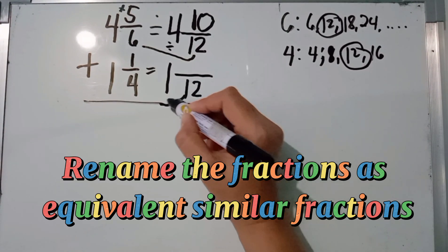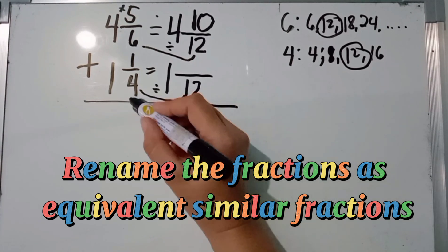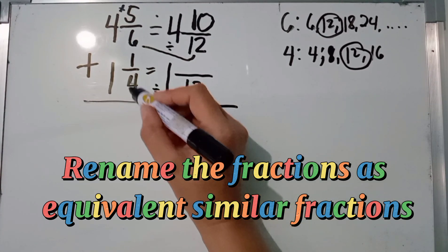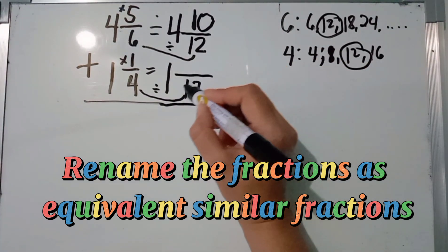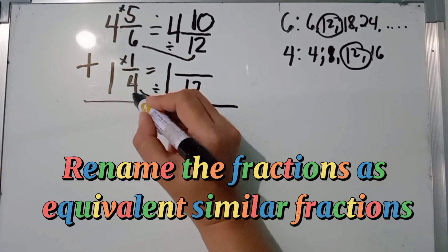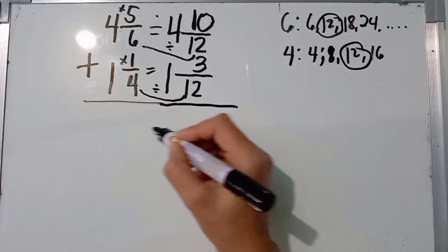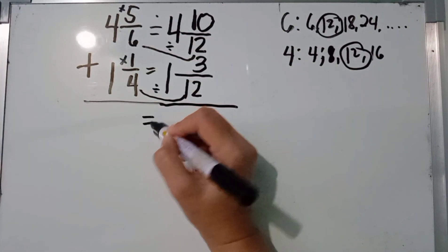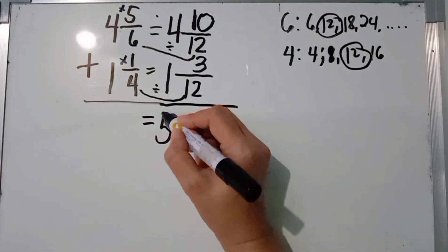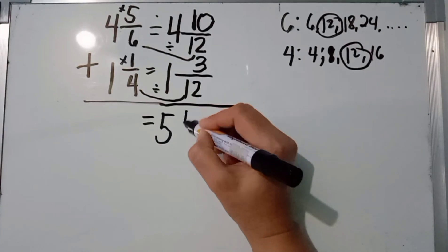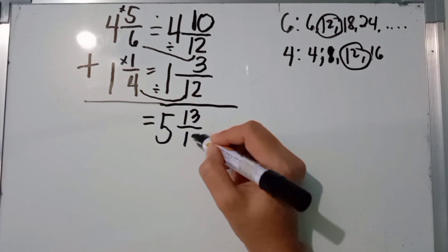Same for the second fraction: 12 divided by 4 is 3, then 3 times 1 equals 3. Now add: 4 plus 1 equals 5 for the whole numbers, and 10 plus 3 equals 13 for the numerators. Copy the denominator 12.